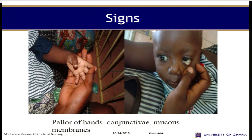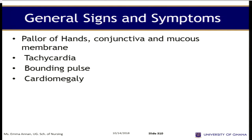When diagnostic tools are not available, you can compare the palm of the child with the palm of the caregiver or the mother. You can see that the child is really very anemic — the conjunctiva is pale and the mucous membranes as well. Other general signs include pallor, tachycardia, bounding pulse, and cardiomegaly.